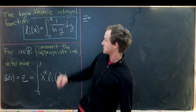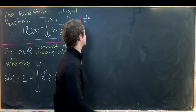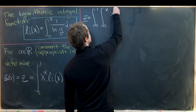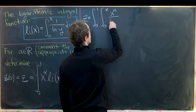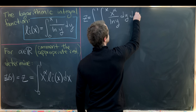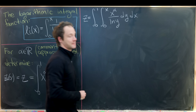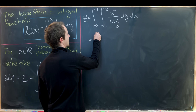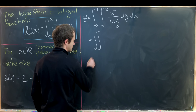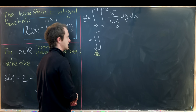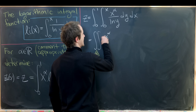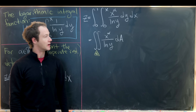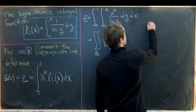We substitute the definition of Li(x) inside the integral, so z equals the integral from 0 to 1 of the integral from 0 to x of x^α over ln(y) dy dx. We convert this iterated integral into a double integral over a region I'll call 'triangle,' giving the double integral of x^α over ln(y) dA.